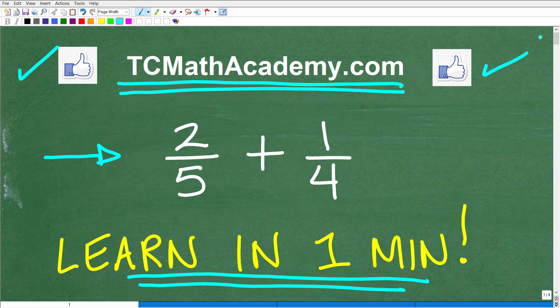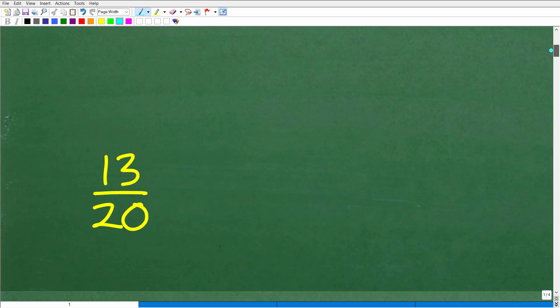Okay, so 2/5 plus 1/4. What is the answer? Let's go and take a look at that right now. The answer is 13/20.